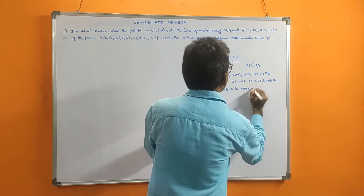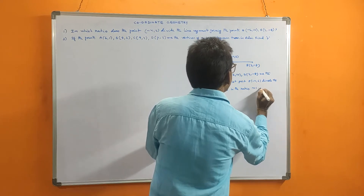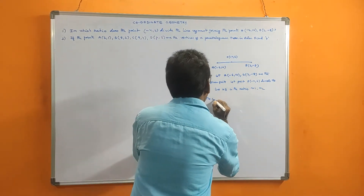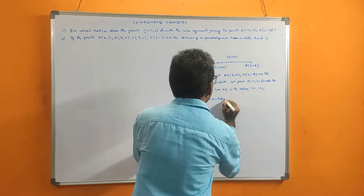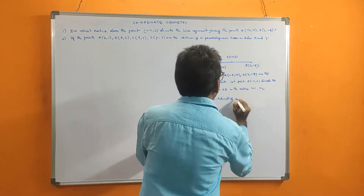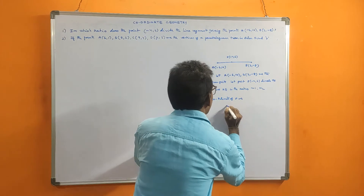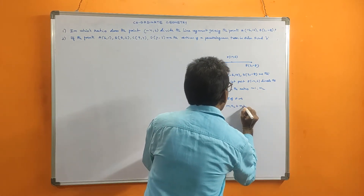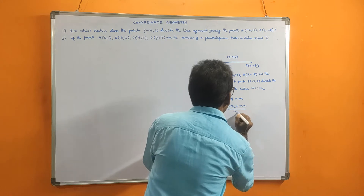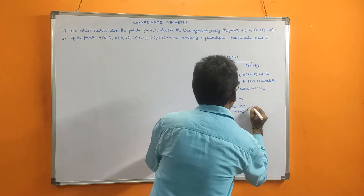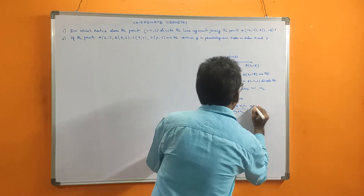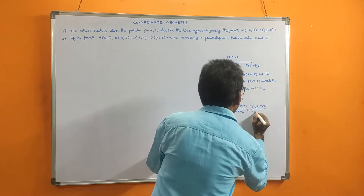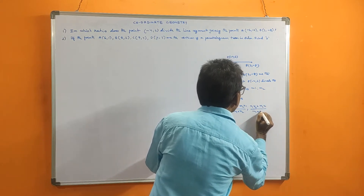The ratio is M1 to M2. Therefore, the coordinates of P are given by the section formula: M1·x2 + M2·x1 divided by M1 + M2, comma, M1·y2 + M2·y1 divided by M1 + M2.